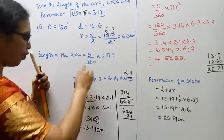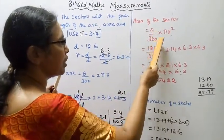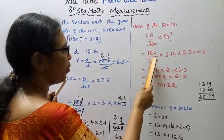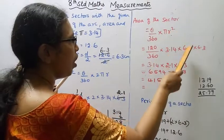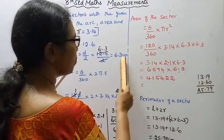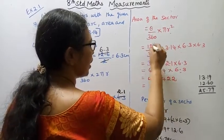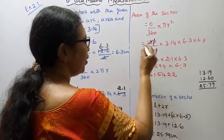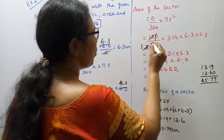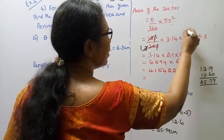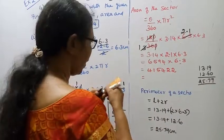Now for the area of the sector, the formula is theta by 360 into pi r squared. Substituting: theta is 120 by 360, into pi 3.14, r squared is 6.3 into 6.3. Cancel the zeros: 0 and 0 cancel. 12 threes are 36, then 3 ones are 3, 3 ones are 3, 3 twos are 6, 3 ones are 3.